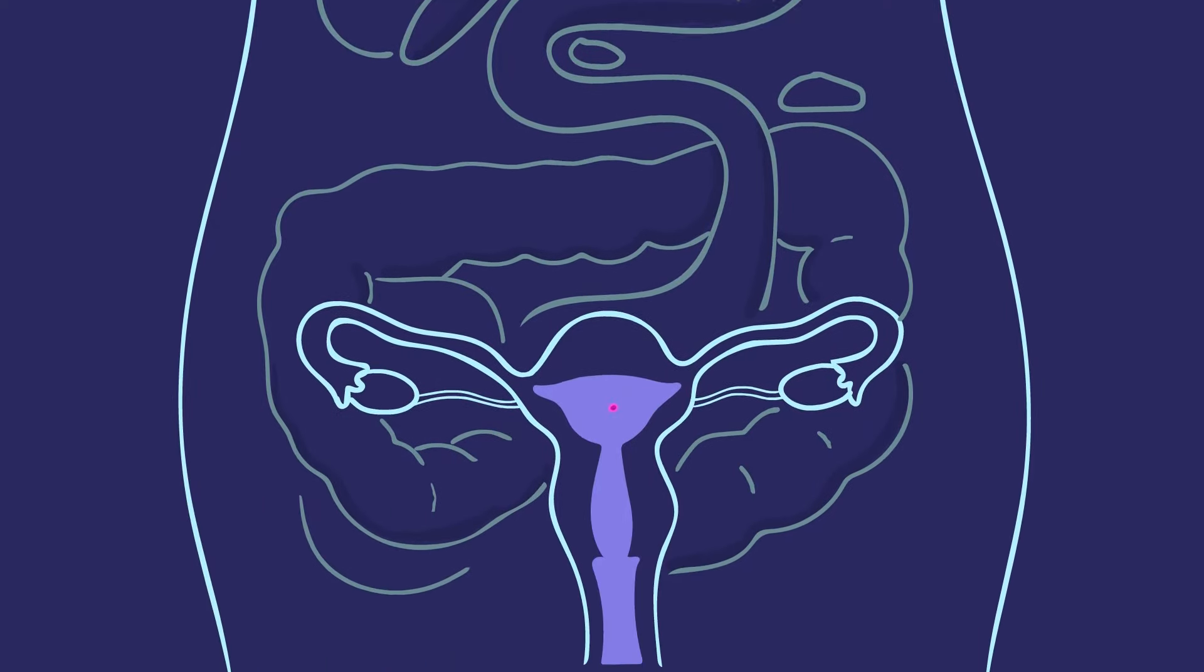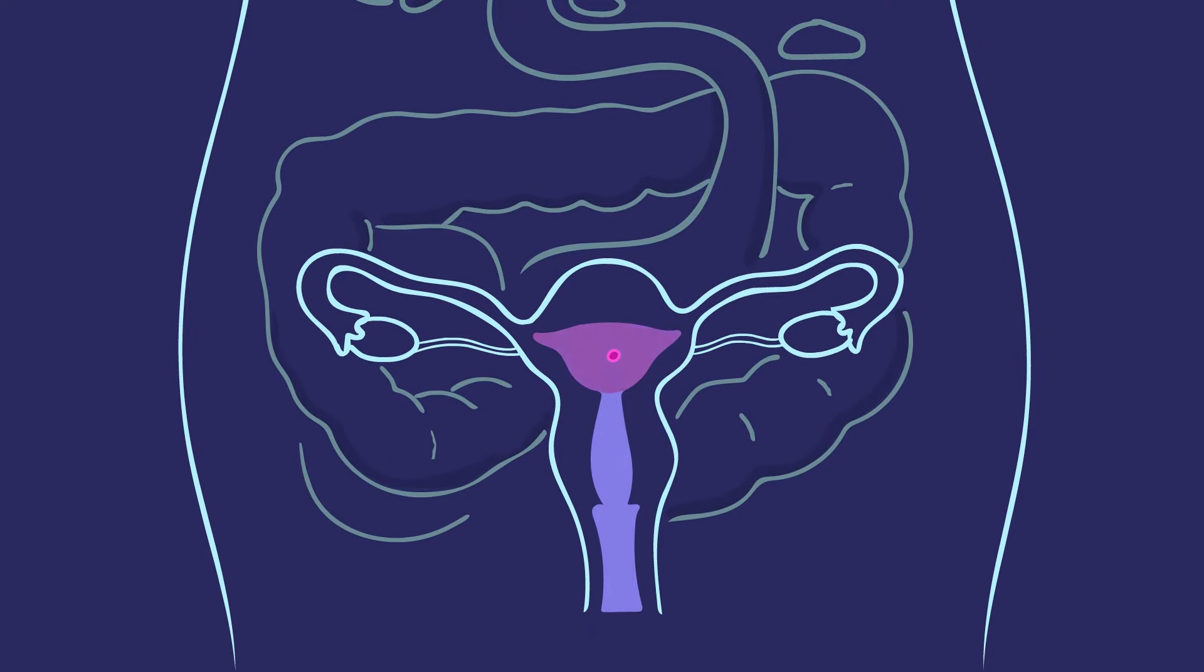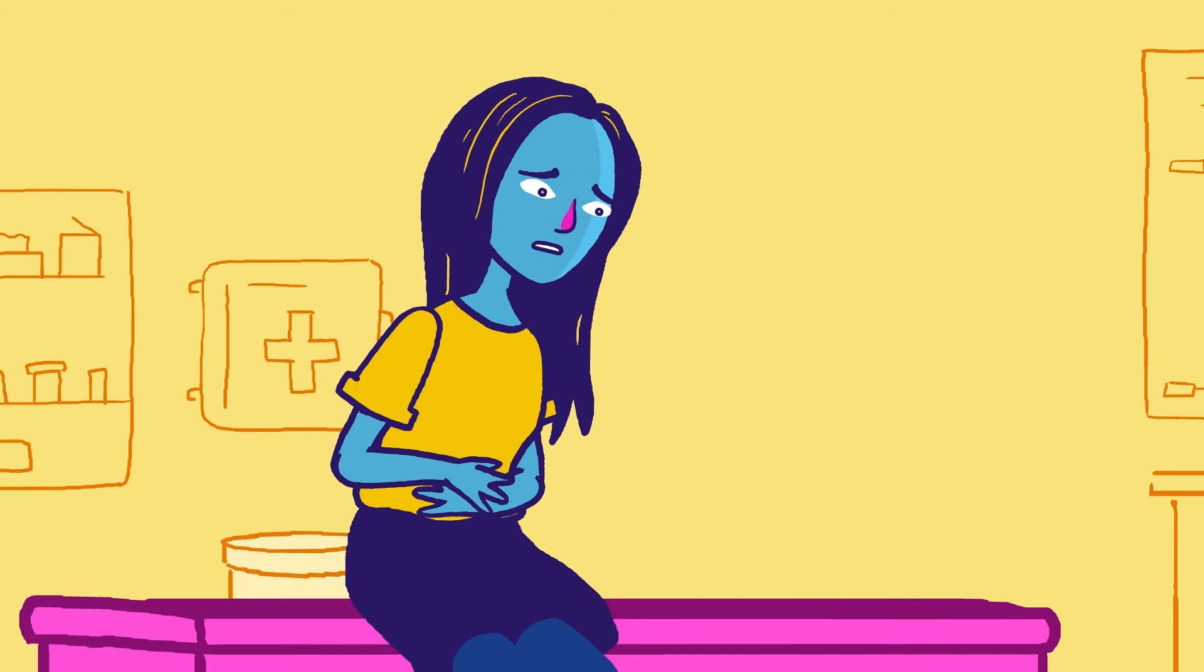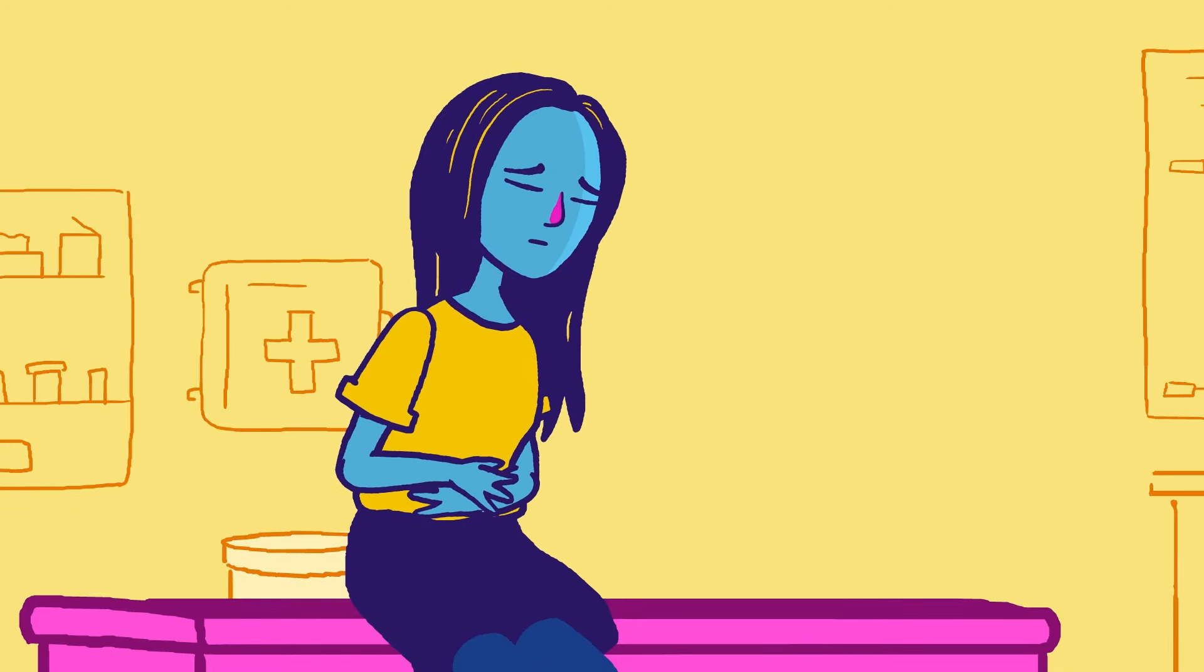The medicines work by stopping the pregnancy from growing and then causing cramping and bleeding to empty the contents of the uterus through the vagina. For some people, this might feel like a very heavy period. For others, it will be an intense experience with intense cramping.